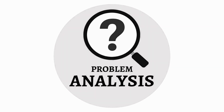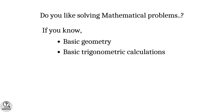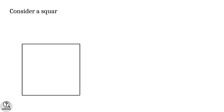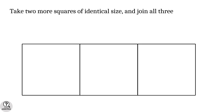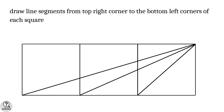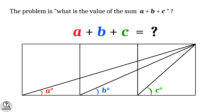Hello friends, back to Problem Analysis — it's me, Jassim. If you are interested in problem solving and know the basic geometry and basic trigonometric calculations, here is an interesting problem. Consider a square; take two more squares of identical size and join all three in a single row as shown in the figure. Draw line segments from the top right corner of the figure to the bottom left corners of each square. The angles made by these lines are a, b, and c degrees as shown in the figure.